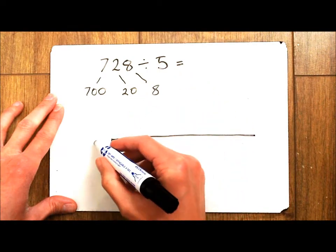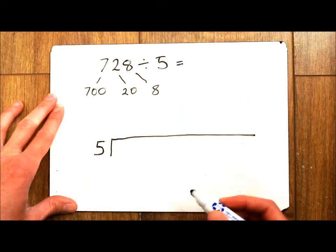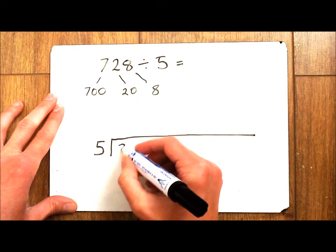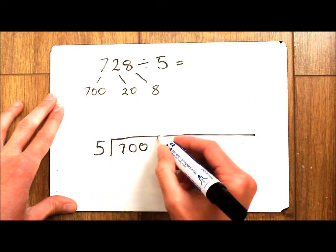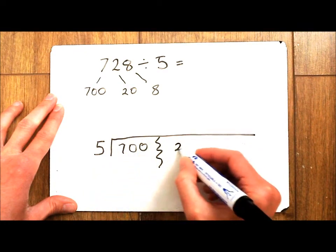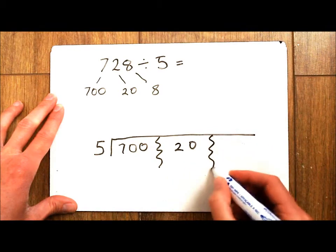So the number I'm dividing by which is 5 goes on the outside, and then each of the parts of my other number go inside the bus stop and I'm going to separate them by a zigzag line.